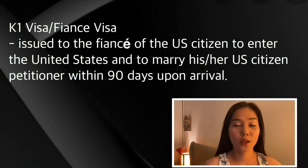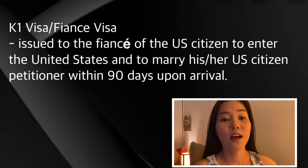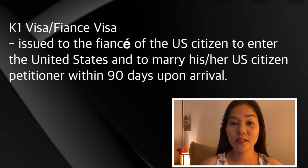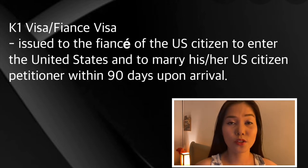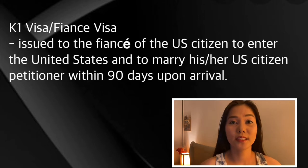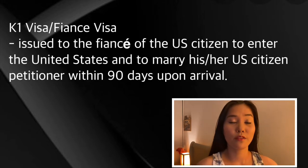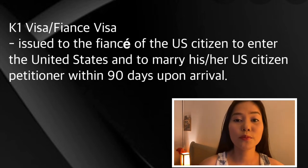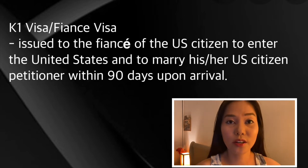First of all, what is a K-1 visa or fiancé visa? It is a visa issued to a fiancé or fiancée of a U.S. citizen to enter the United States and to marry his or her U.S. citizen petitioner within 90 days upon arrival. So once the couple marries, the foreign fiancé can adjust status to become a lawful permanent resident of the United States, or what we call green card holders.